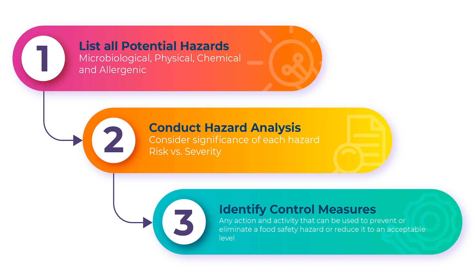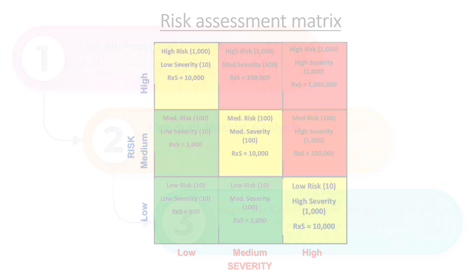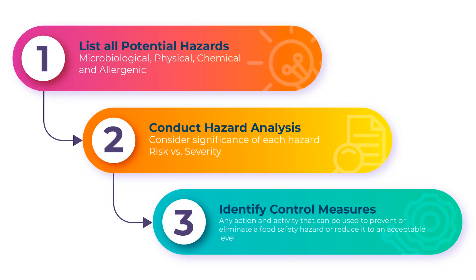In the second stage you will do a proper hazard analysis where you will identify the risk and the severity of each hazard and then determine whether that hazard is significant or not significant. Thirdly, in the third stage, you will write down the potential or existing control measures which will control that hazard and enable the organization to produce safe food. Importantly, control measures should already be existing in your system through the prerequisite program.